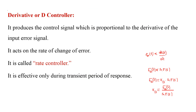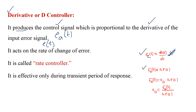Coming to the next type — the derivative controller or D controller. The controller which produces a control signal proportional to the derivative of the error signal is called the derivative controller. Here A(t) is proportional to dE(t)/dt. Applying the Laplace transform: A(s) is proportional to s·E(s). Removing proportionality with derivative constant Kd: A(s) = Kd·s·E(s), so Kd = A(s) / (s·E(s)).